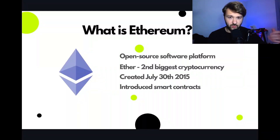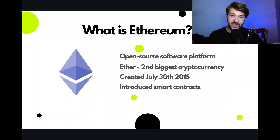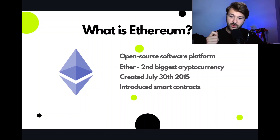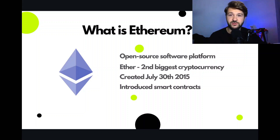So what is Ethereum? Well, it's an open source software platform where developers can build their own applications on the Ethereum blockchain. Ethereum has its own cryptocurrency called Ether — it's the second biggest cryptocurrency and it was created on July 30th, 2015. The main thing to know is that Ethereum introduced the concept of smart contracts to blockchain, which allowed developers to build and customize whatever application they want. Today we're seeing a lot of these applications, such as DeFi and NFTs.